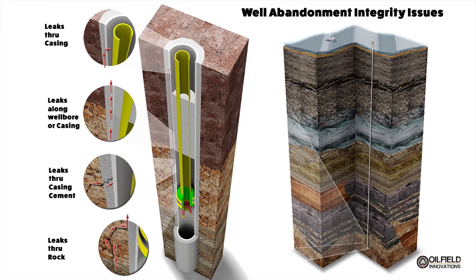The various abandonment well integrity issues that you must prevent are leaks through the rock, leaks through the casing cement, leaks along the well bore or casing, and leaks through the casing. During well abandonment you must ensure that all of these various integrity issues do not exist when you're placing cement plugs miles or kilometers below the earth's surface.